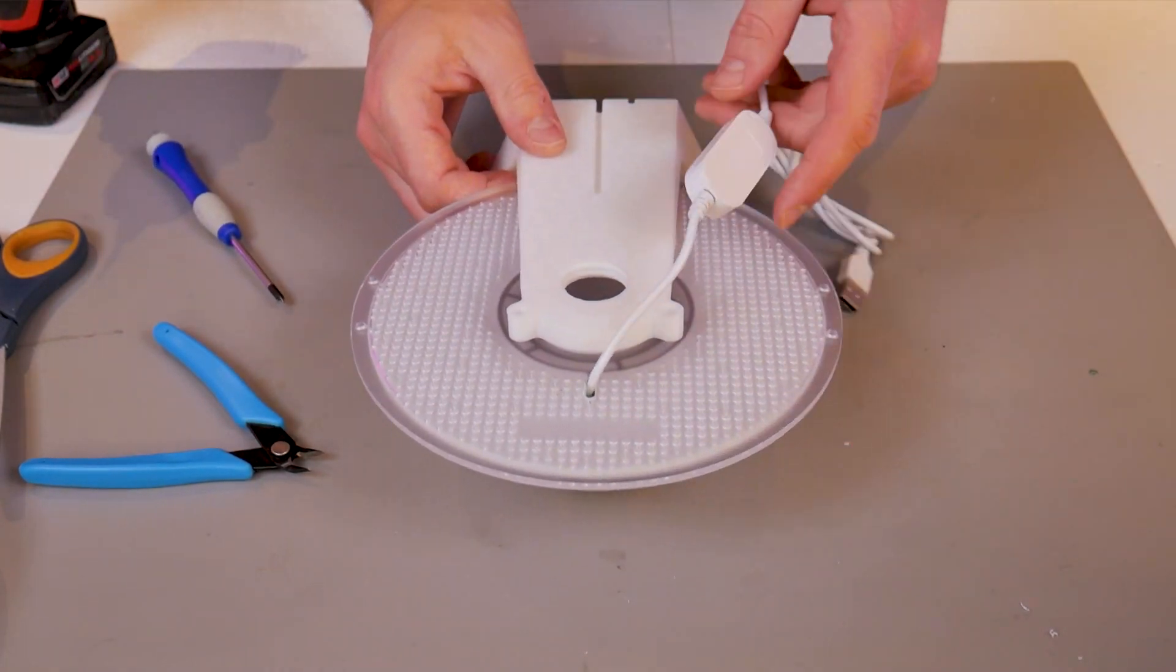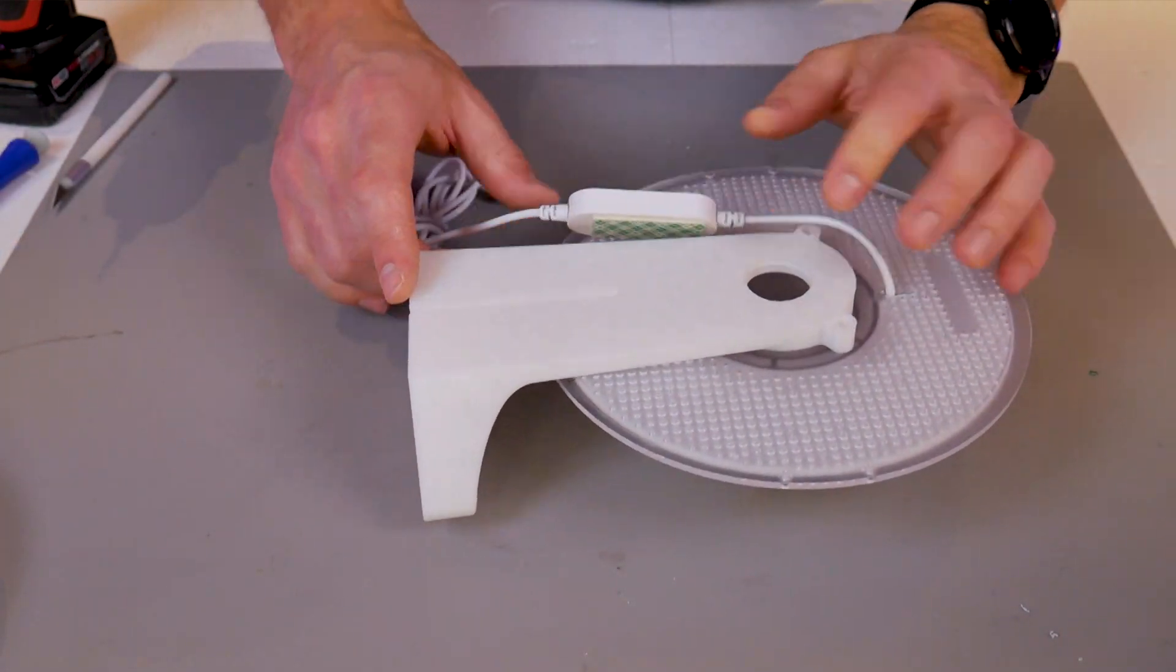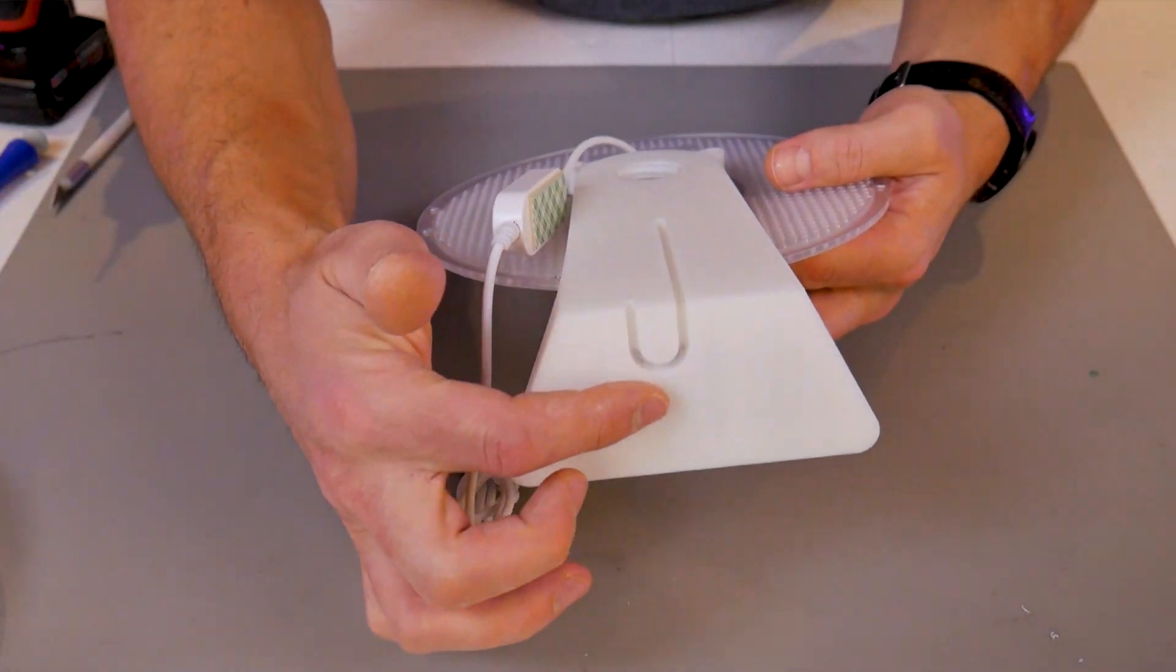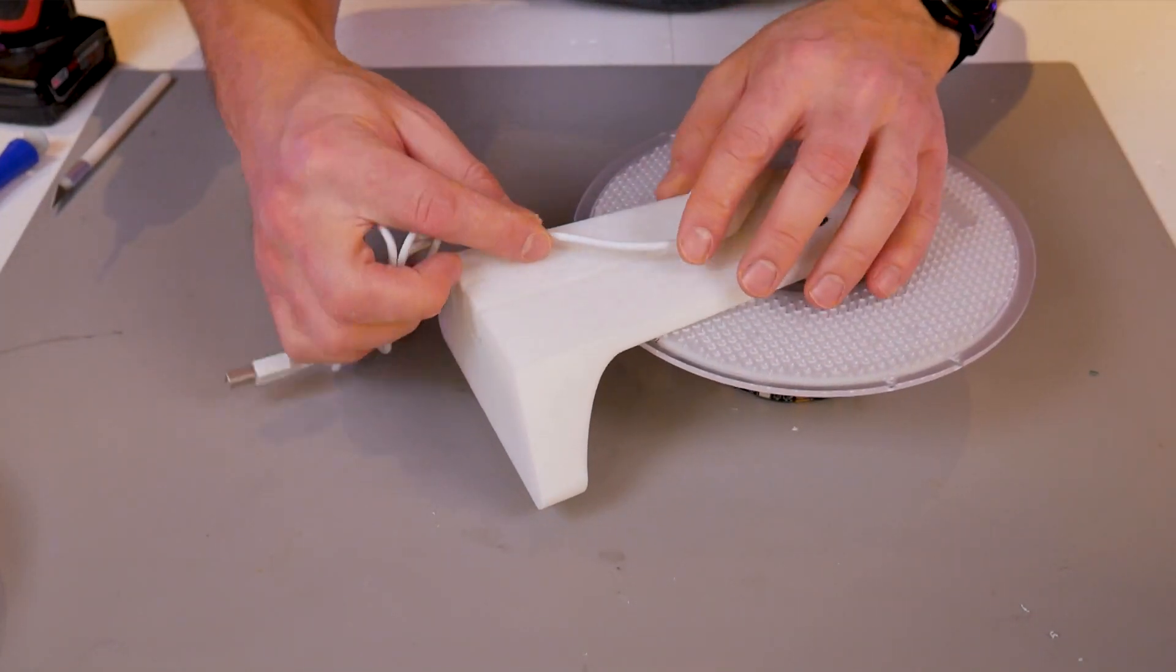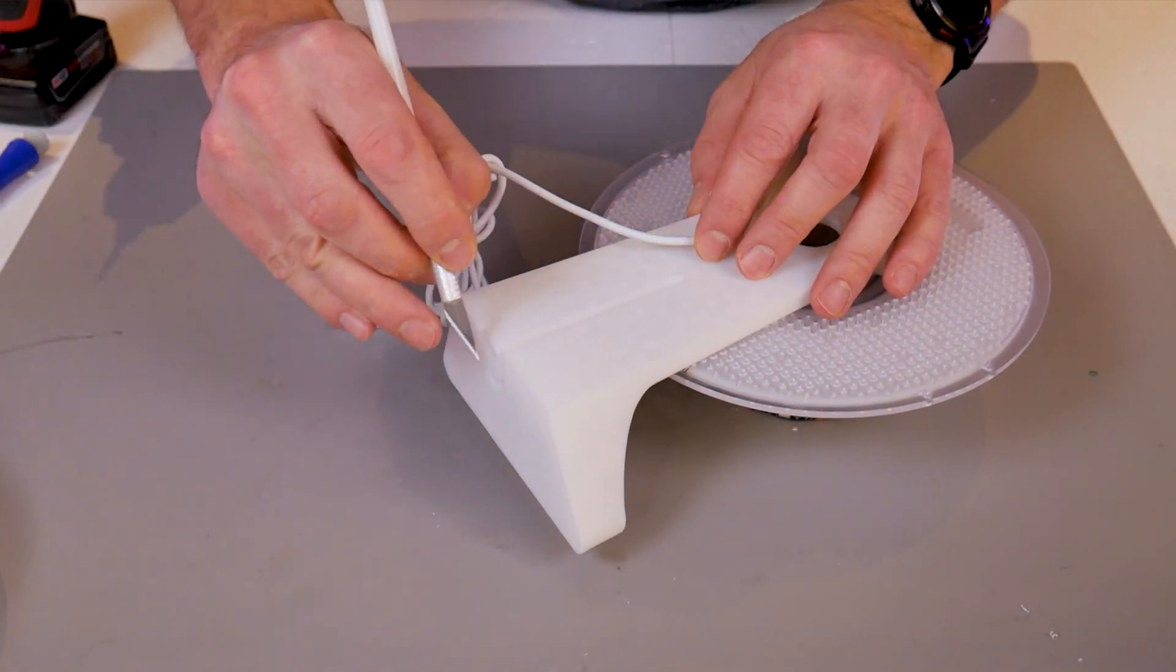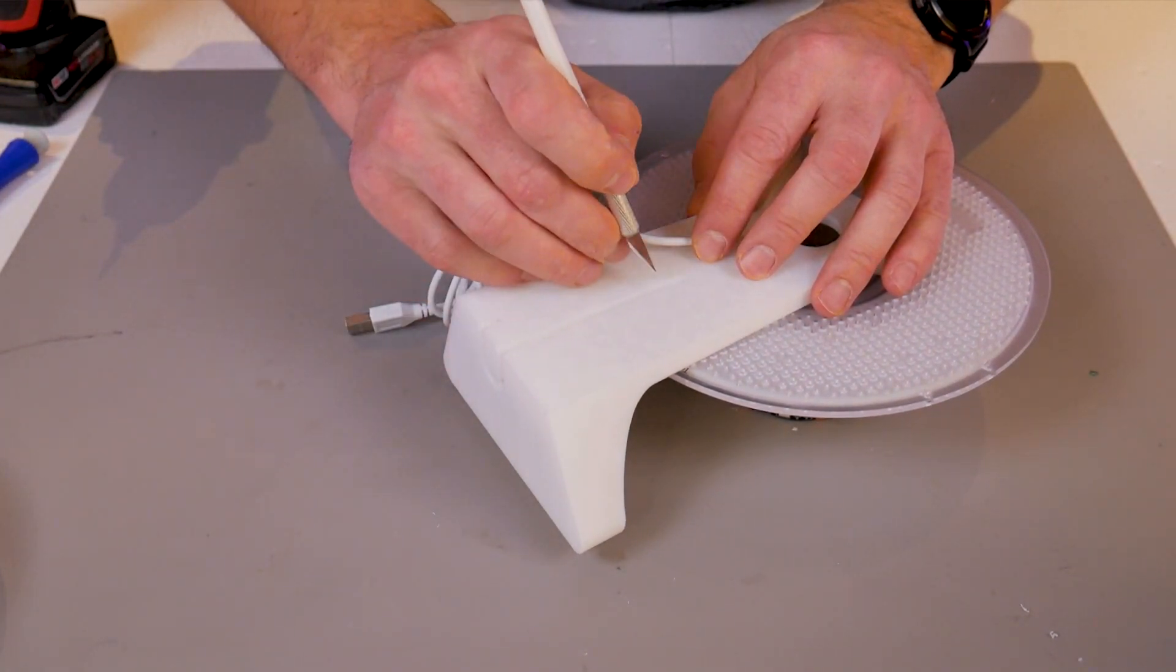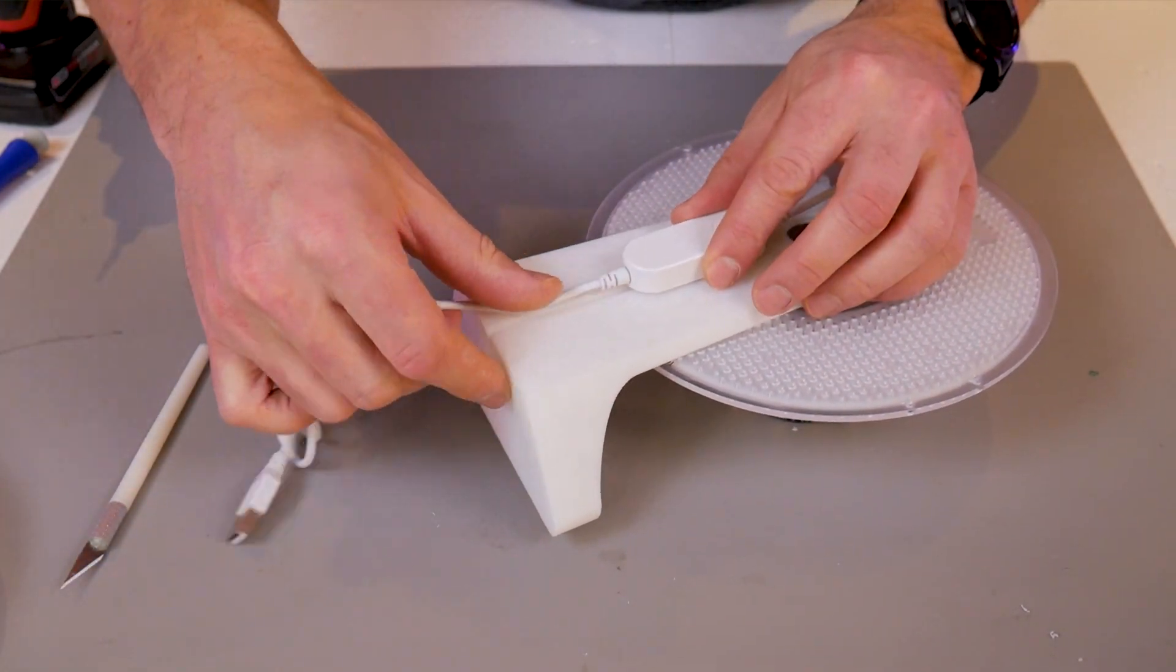The coarse threads on those plastic tapping screws will thread very easily into the spool material. Then we can address the placement of the controller as well as the wire management. On the back of the stand you'll find this wire groove and loop, and it's intended for 4 millimeter diameter wire. This is a really common size for USB wires, but if yours is a little larger you can trim away the edges of that groove with a sharp knife.